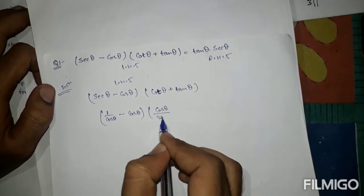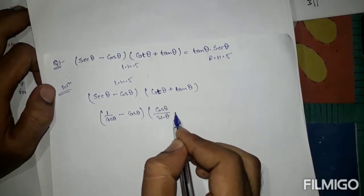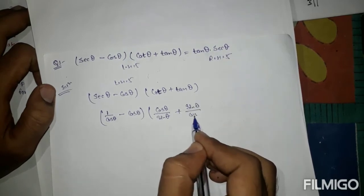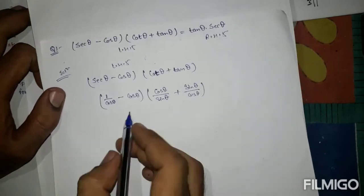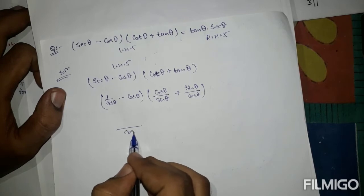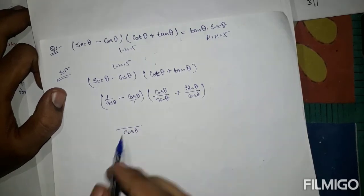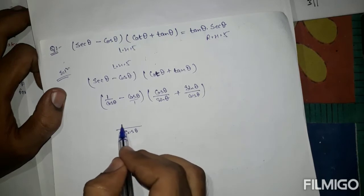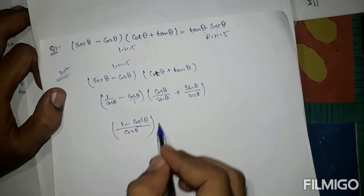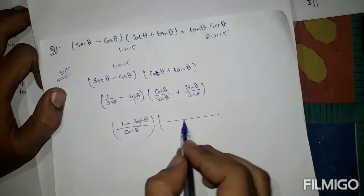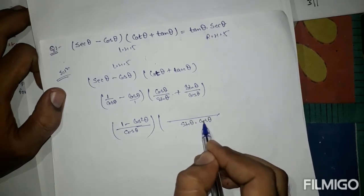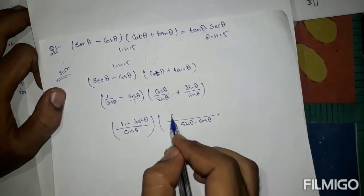Taking LCM from the first bracket gives (1 - cos²θ)/cosθ. Taking LCM from the second bracket over sinθ·cosθ gives (cos²θ + sin²θ)/(sinθ·cosθ), which equals 1/(sinθ·cosθ).